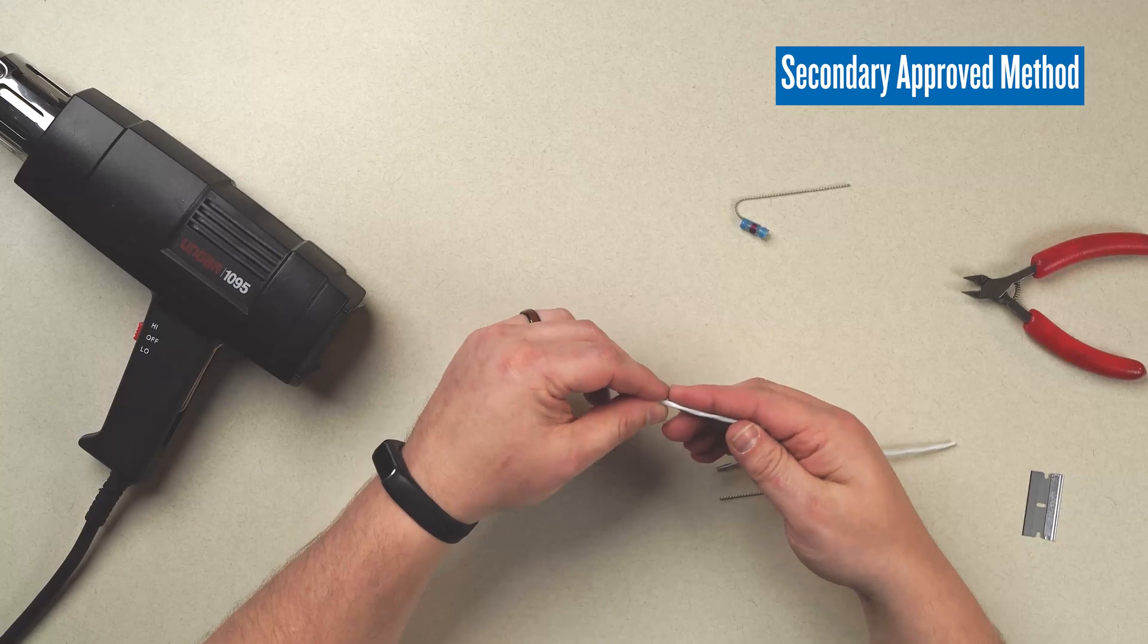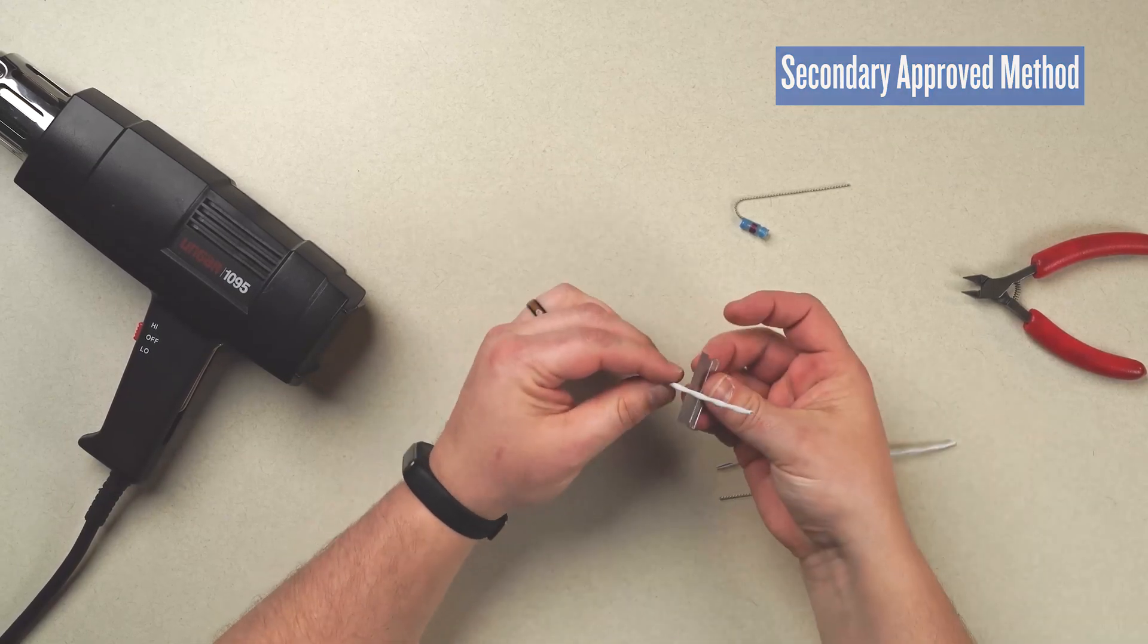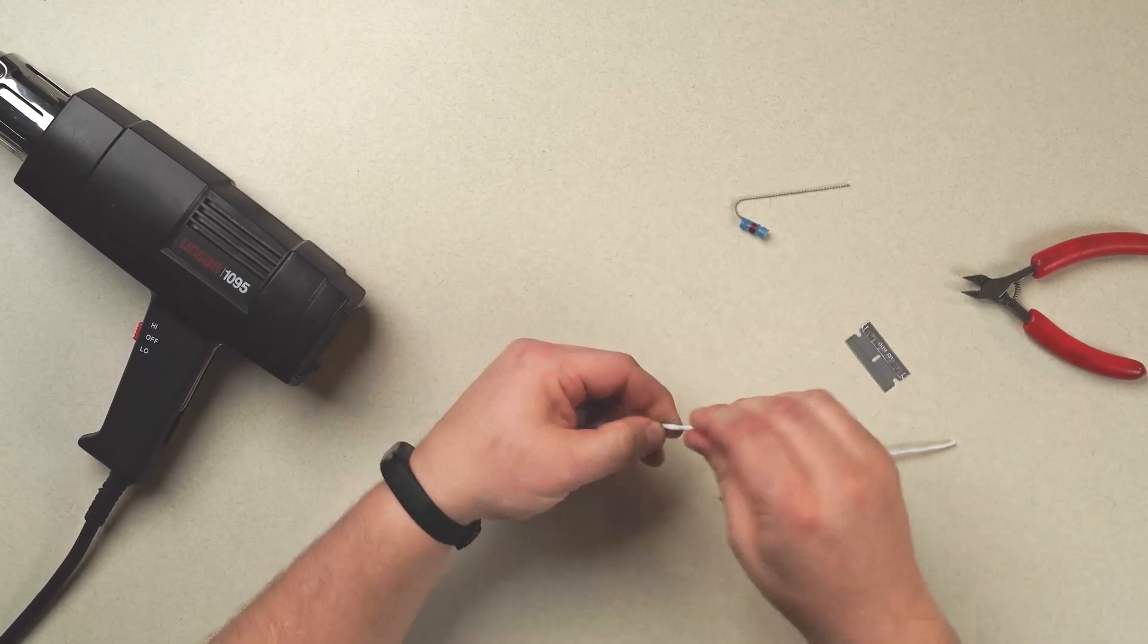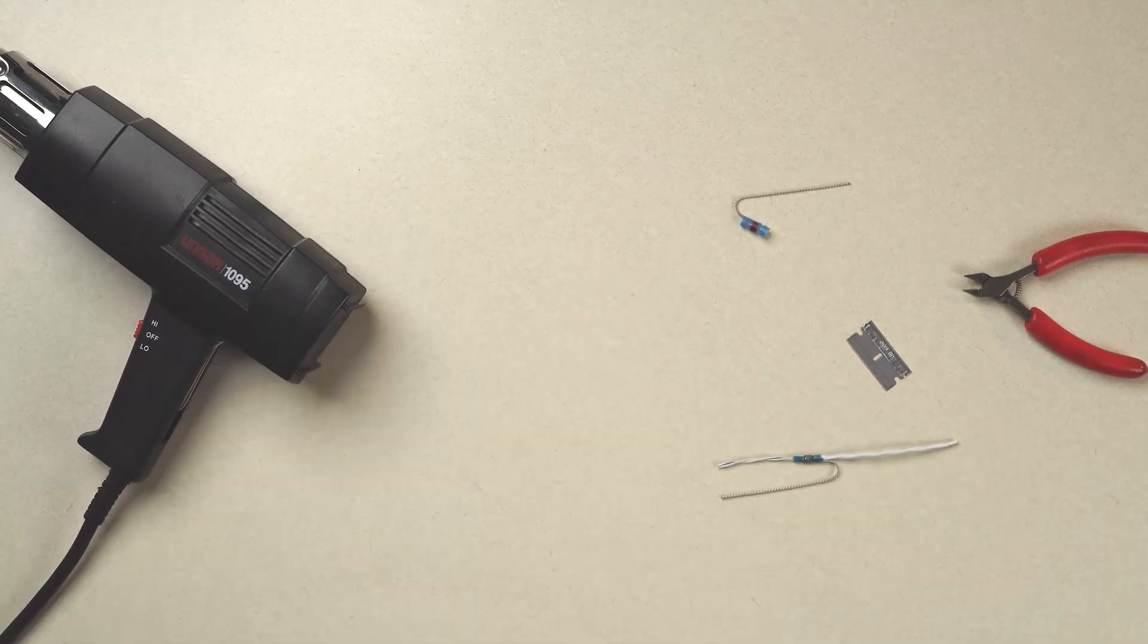Start with our wire prep. Start scoring the jacket. Removing the insulation sleeve.